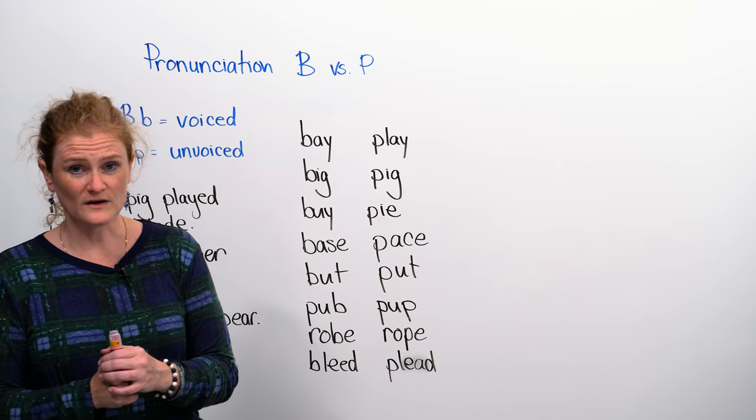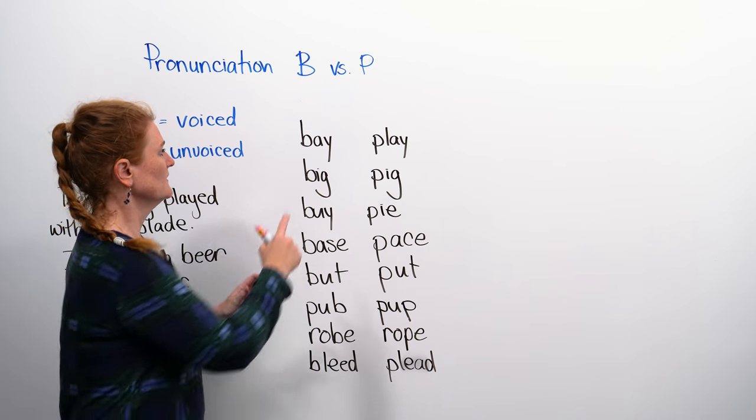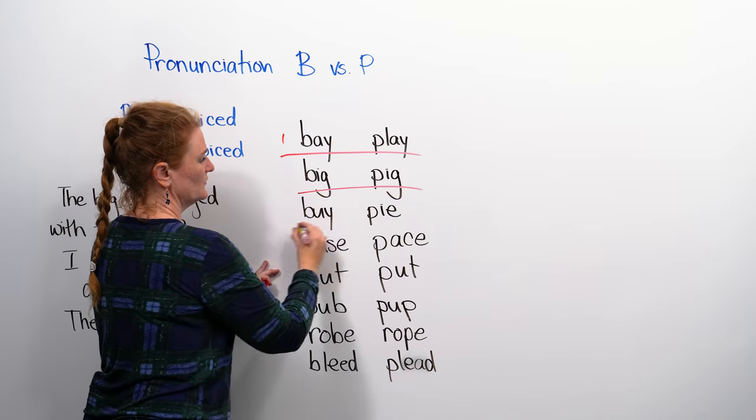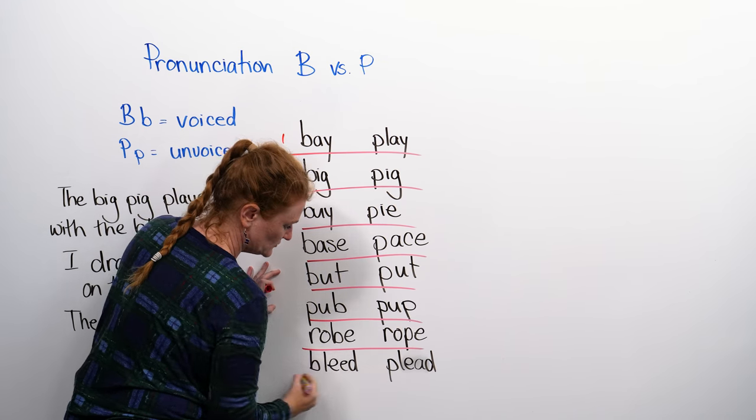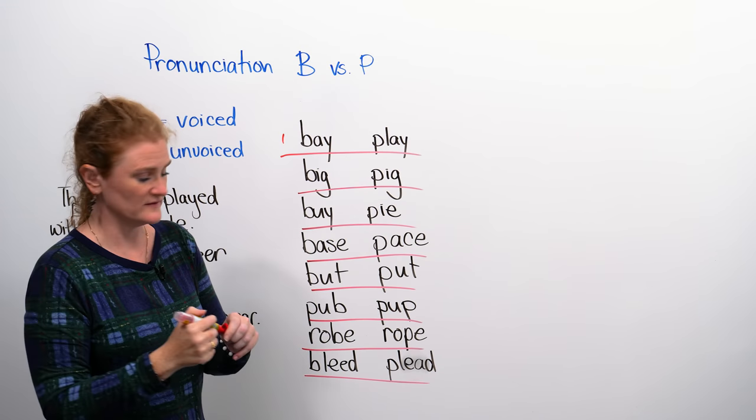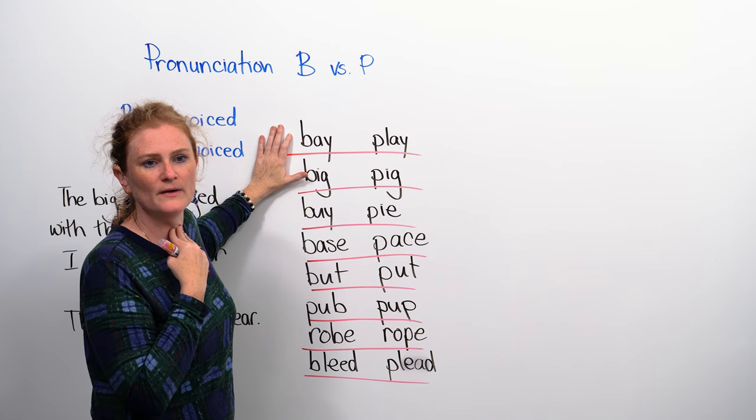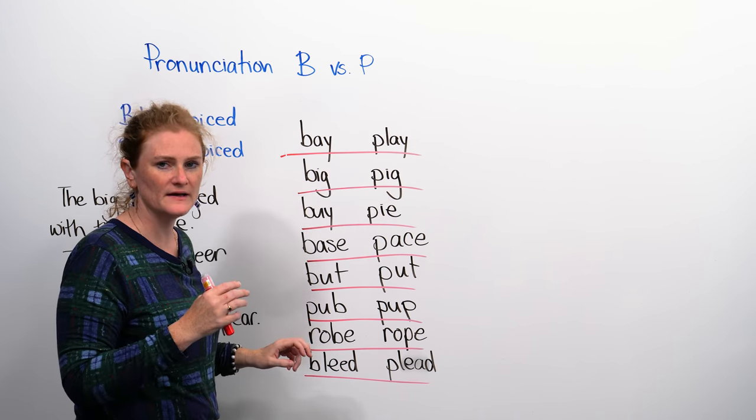Great. What we're going to do now is we're going to put the two words together, and these are our minimal pairs. We're going to say the words across like this so you can practice the sound and make sure you're saying them differently. So we're going to do this: bay, b-b-b-bay, and play. Bay, play.